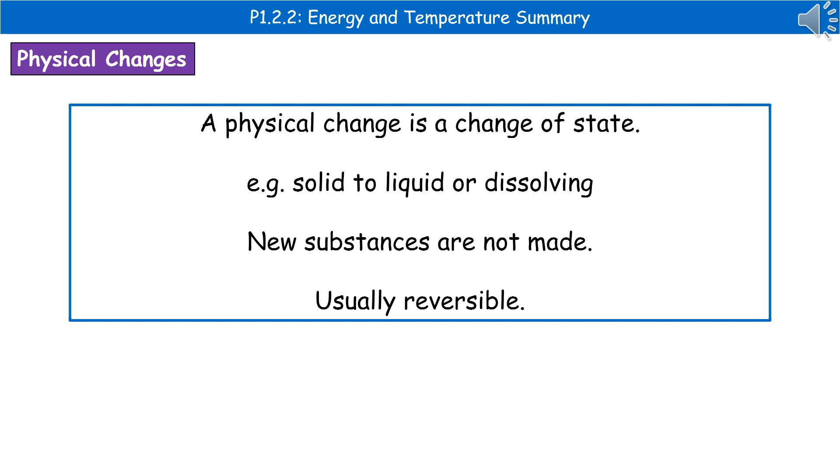What we mentioned there are two different types of change: physical changes and chemical changes. A physical change is a change of state—solid to liquid or liquid to gas or dissolving. All of those are physical changes. A characteristic of these is that we're not making a new substance. If we start with a block of ice that's made of H2O, and then melt it into water, it's still H2O. Physical changes are usually reversible. If we've melted ice, we can then refreeze it back into ice.